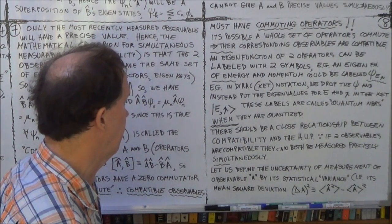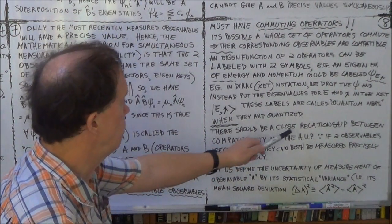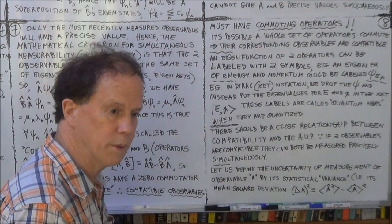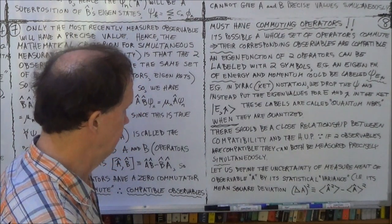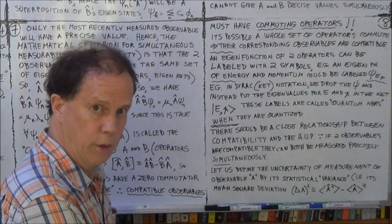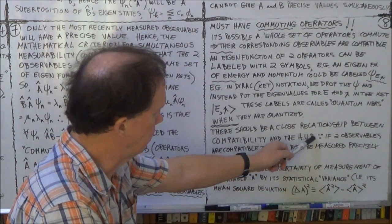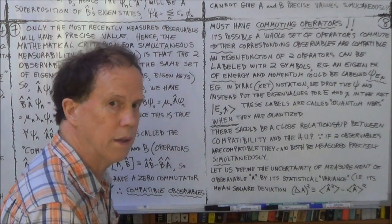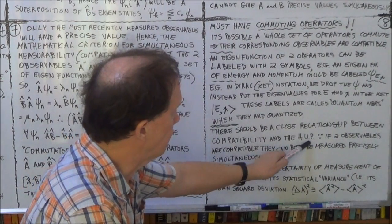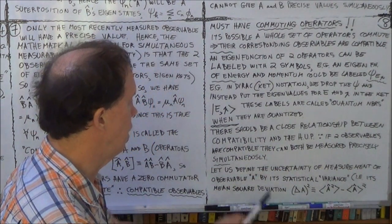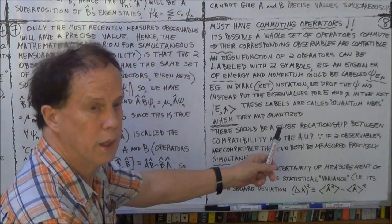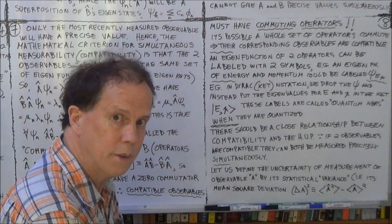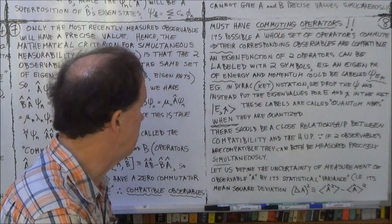So, here, we know using the commutator, if the commutator is zero, then we have compatibility between the two observables. And in the case where it's not zero, you know, we could imagine the two observables are momentum and position along the x-axis, then we get the Heisenberg Uncertainty Principle. So, let's try, let's now try to find a relationship between the commutator and the Heisenberg Uncertainty Principle. We ought, we should be able to do that.